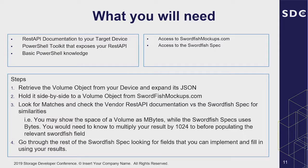Now let me show you what the mapping looks like. If you want to map your storage device directly to a Swordfish API, that's where all the meat comes in — how do you map what you have to what's existing in the spec? Because they're going to be different; nobody does everything the same. What you need: the REST documentation for your device, a PowerShell toolkit that exposes that REST documentation, basic PowerShell knowledge, access to Swordfish mockups, and access to the Swordfish spec.